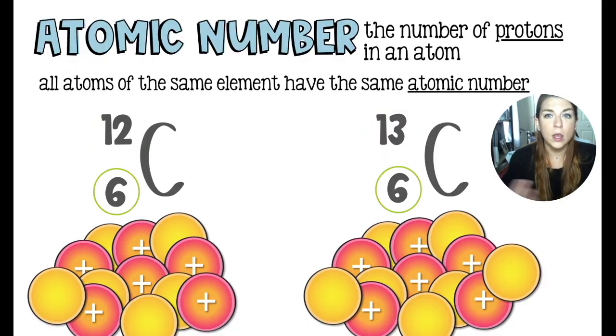The atomic number on the bottom represents the number of protons in the atom, and all atoms of the same element have the same atomic number. That's what makes them that particular element. 35 protons or atomic number 35 is bromine. Atomic number six or six protons is carbon.